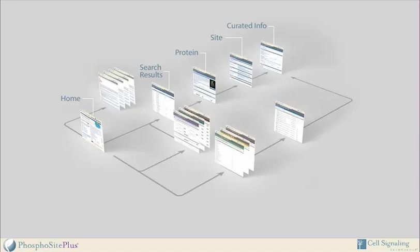As noted earlier, the advanced search interfaces give users unprecedented power to launch biologically meaningful queries, and the browse interfaces are used to mine high-throughput mass spec experiments generated from the literature or directly from experiments performed at Cell Signaling Technology and other labs. Informational pages describe various features of the site, the curation process, and how to use the site. During the course of the tutorial, you are free to use the navigational menu to jump to a section of interest.